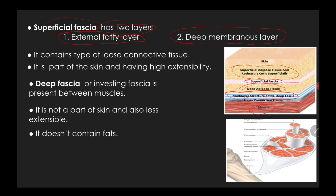There are key differences between deep and superficial fascia. The first difference is that superficial fascia consists of loose connective tissue, while deep fascia consists of dense connective tissue.